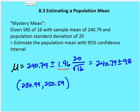That's how you set this particular problem up. Using this formula: I have a sample mean, a Z value, my known standard deviation, and the sample size — and I can create my confidence interval value for the population mean.